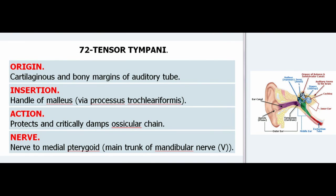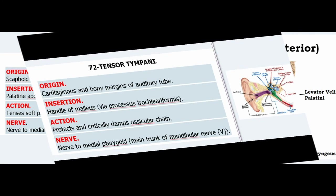72. Tensor Tympani. Origin: Cartilaginous and bony margins of auditory tube. Insertion: Handle of malleus via processus trochleariformis. Action: Protects and critically damps ossicular chain. Nerve: Nerve to medial pterygoid, main trunk of mandibular nerve (V).